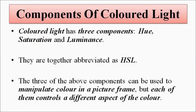The chromaticity diagram is directly related to hue, saturation, and luminance, so we need to revisit them briefly. As we already discussed, colored light has three components: hue, saturation, and luminance, collectively called HSL. Each of these characteristic features manipulates a different feature of color, adding an extra dimension to it.